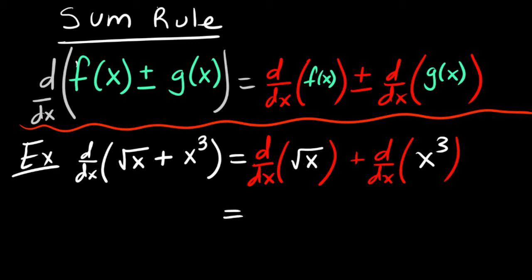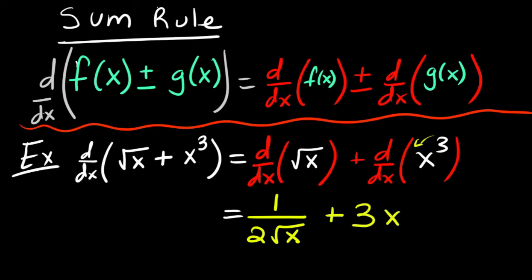We would just use the power rule on each one of these. The derivative of the square root of x — remember, you should memorize this one — is just one over two square root of x. And then plus, bring down the hammer, three x squared.